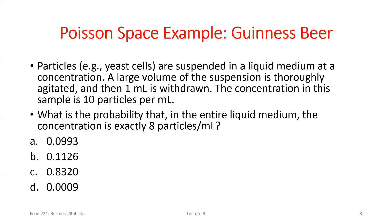If the probability is greater than 0.5, it would automatically make it the most likely outcome — but we know 10 is the most likely. So before plugging anything in, you know the probability of seeing 8 successes can't be greater than 0.5. These are principles that let you catch calculator mistakes: if you hit the wrong button and get 0.7, step back and think about the problem — you know that probability can't be right.